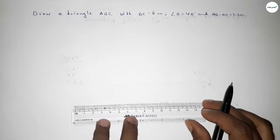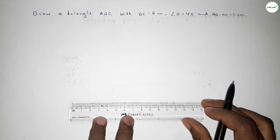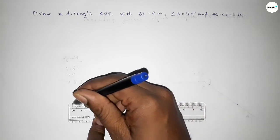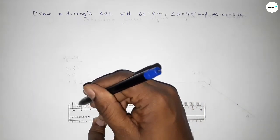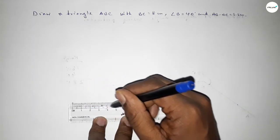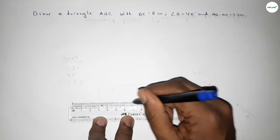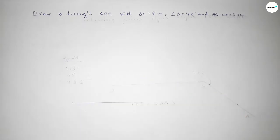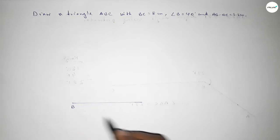First of all, we have to draw a straight line of length 8 centimeters. Starting from 0: 1, 2, 3, 4, 5, 6, 7, 8. Taking here point B and here point C.